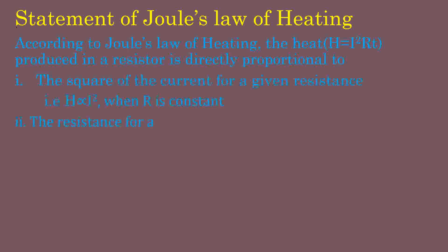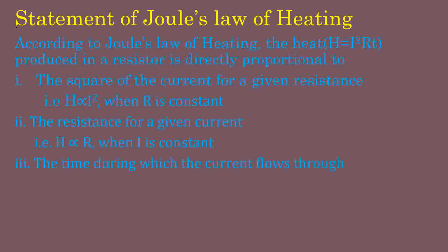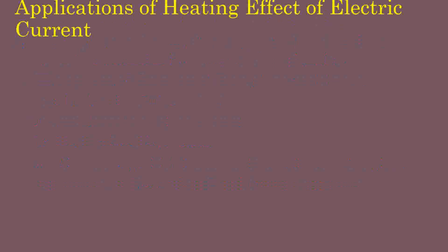From the formula H = I²RT, heat is directly proportional to I² when R is constant; directly proportional to R when I is constant; and directly proportional to T when both resistance and current are constant — that is, the time during which the current flows through the given resistance.